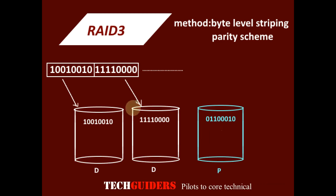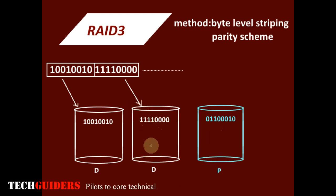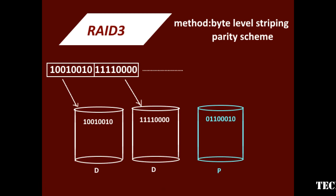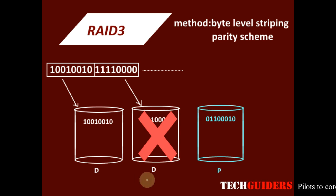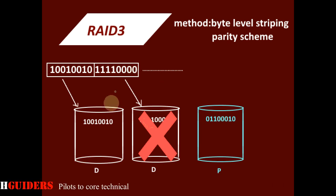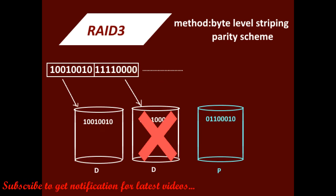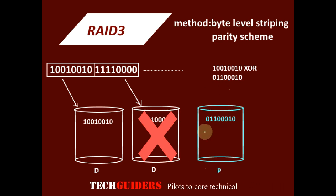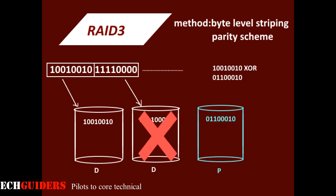RAID 3 provides redundancy with more usable disk capacity than RAID 2. Even if one data disk fails, the data is safe and can be rebuilt using the parity disk and the remaining data disks with an XOR operation on the remaining bytes. For this redundancy we are keeping only one disk, so more usable disk space is available.